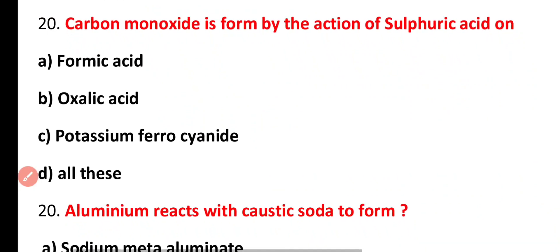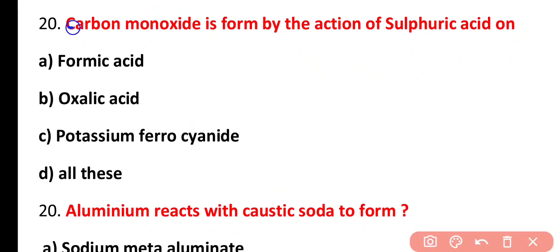Question number 20. Carbon monoxide is formed by the action of sulfuric acid on formic acid, oxalic acid, potassium ferrocyanide, all of these. Correct answer is option A. Formic acid and sulfuric acid when they react, carbon monoxide is formed by their dehydration.